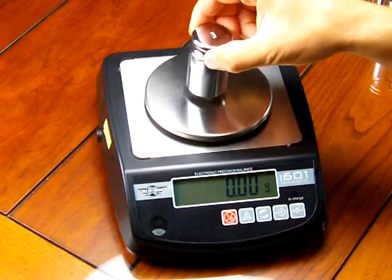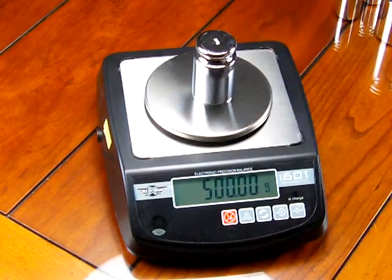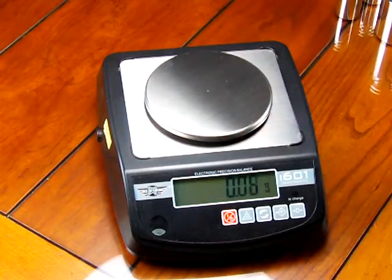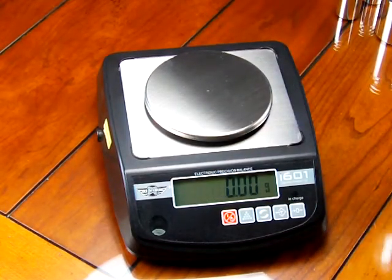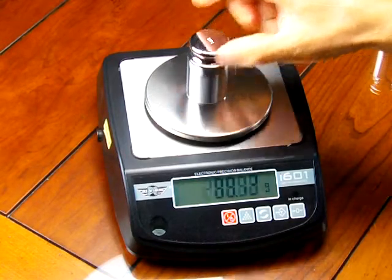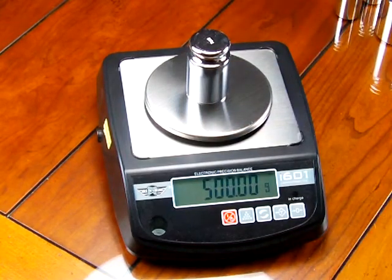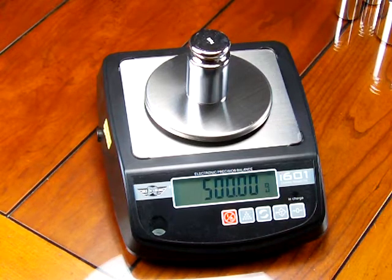So if I put the calibration weight on, you can see now, not only is the scale very precise or repeatable, it is also now very accurate. So the 500 reads 500 grams.